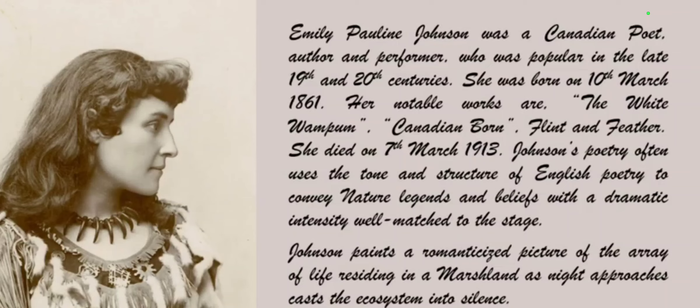Johnson's poetry often uses the tone and structure of English poetry to convey nature, legends, and themes with a dramatic intensity well matched to the stage. She paints a romanticized picture of the array of life residing in a marshland as night approaches and casts the ecosystem into silence. Marshlands means swampland or slough. You will come to know more about it. When you hear 'marshlands,' you might have a negative picture in your mind, but Emily Pauline Johnson brings a different kind of picture in her reader's mind.